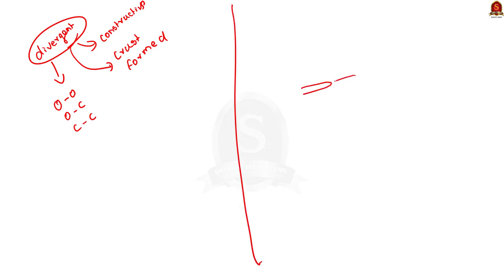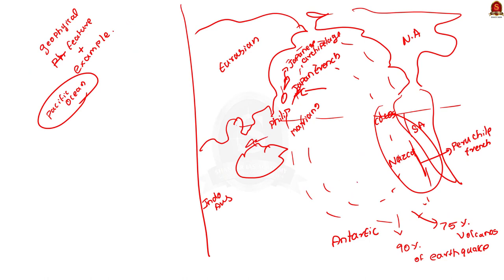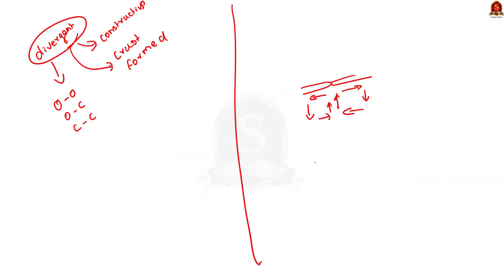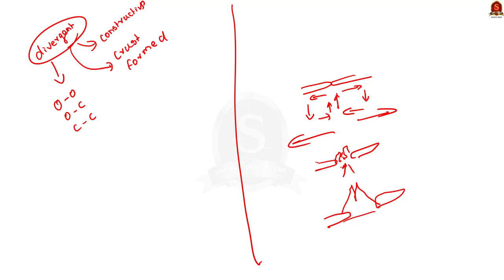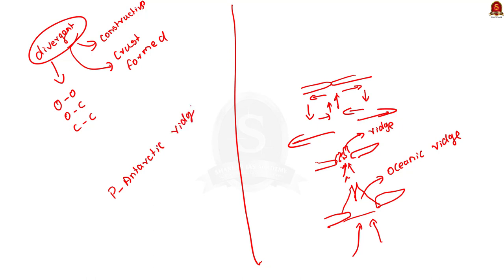In the circum-pacific zone, the divergent boundary is found in the southern side between the Pacific plate and Antarctic plate, and also between Pacific plate and Nazca plate. Due to convection currents, the plates start pulling apart. The resulting void in the crust is filled with lava from the upper mantle. Over time, this results in the formation of oceanic ridges. The ridges in the circum-pacific zone are the Pacific-Antarctic Ridge and East Pacific Ridge. The lava found here is less viscous basaltic lava.